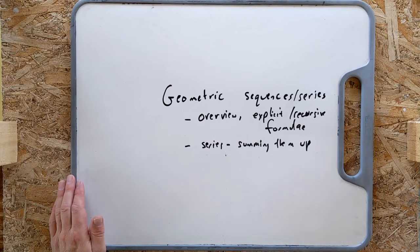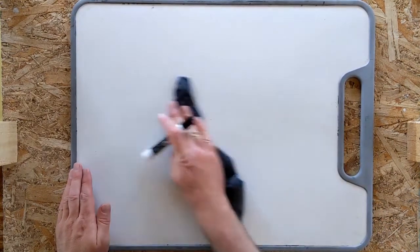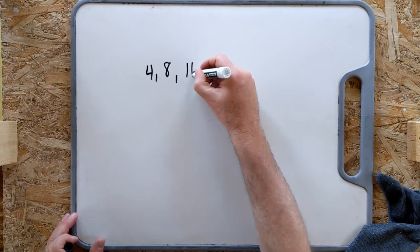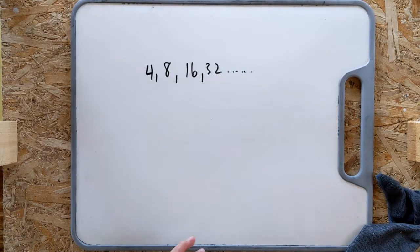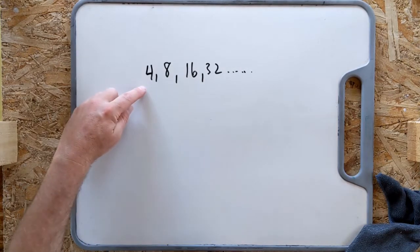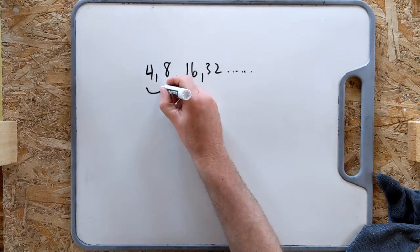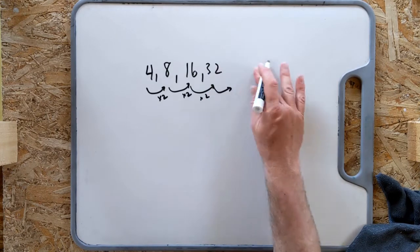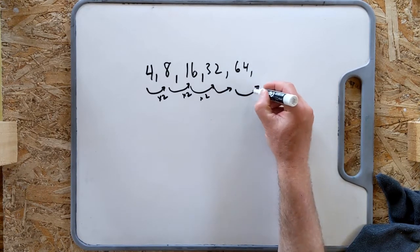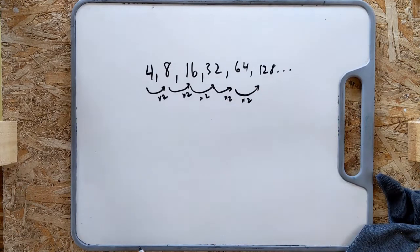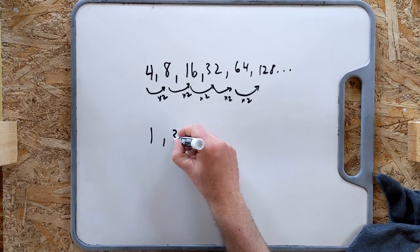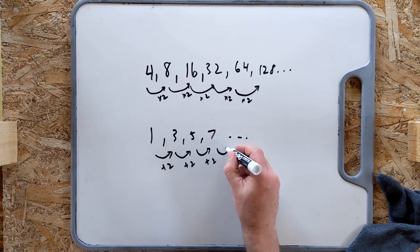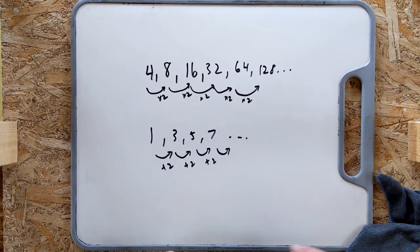Geometric sequences have a common multiple. In this example: 4, 8, 16, 32 — how are you getting from one to the next? You are multiplying by 2. So the next one would be 64, and the next one would be 128. This differs from the arithmetic sequence we did last time, where it was like 1, 3, 5, 7 — we were adding or subtracting a number. In this case, we are multiplying or dividing by a number.